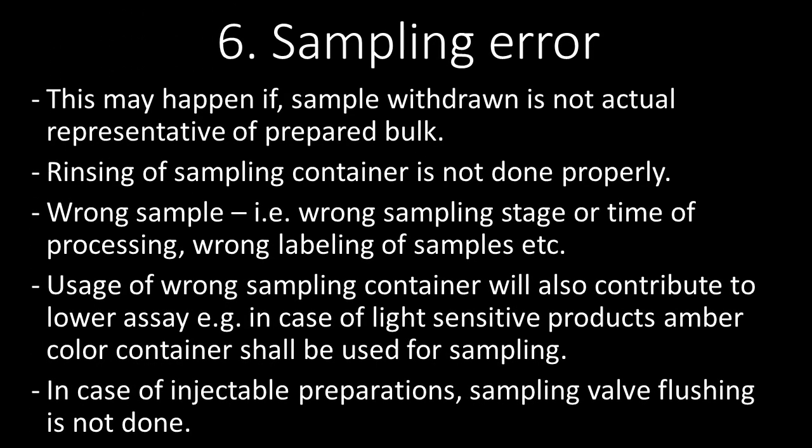The sixth reason for lower assay is sampling error. This may happen if the sample withdrawn is not an actual representative of the prepared bulk, rinsing of the sampling container is not done properly, or wrong samples are withdrawn — for example, wrong sampling stage, time of processing, or wrong labeling. Usage of wrong sampling containers also contributes to lower assay; for light-sensitive products, amber-colored containers shall be used. For injectable preparations, sampling valve flushing shall be done properly.